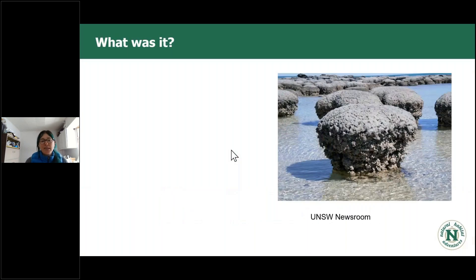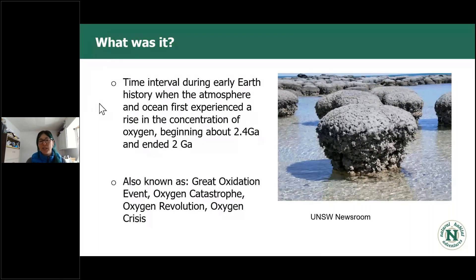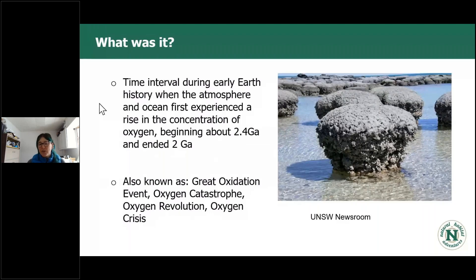When I'm talking about the Great Oxygenation Event, I'm talking about a time interval during early Earth when the atmosphere and ocean first experienced a rise in the concentration of oxygen. We're talking about going back about two and a half billion years ago, and it ended around two billion years ago. It's known by a few different names — the Great Oxidation Event, the Oxygen Catastrophe, the Oxygen Crisis, the Oxygen Revolution. All of these names should give you some indication of how this event must have affected life on Earth: it would have been utterly catastrophic for all life present at this time period.